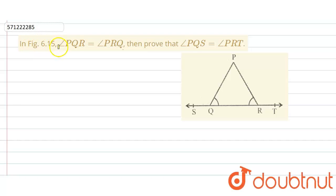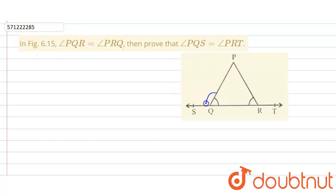In the given question, in the figure, angle PQR is equal to angle PRQ. We have to prove that angle PQS is equal to angle PRT.